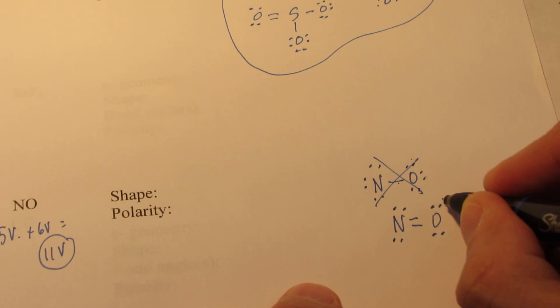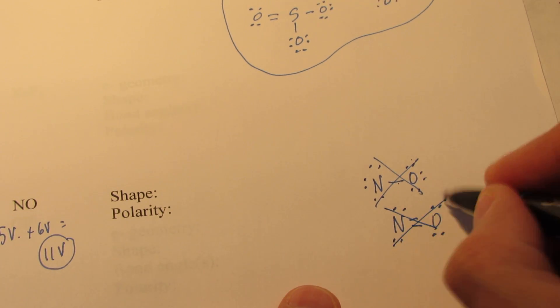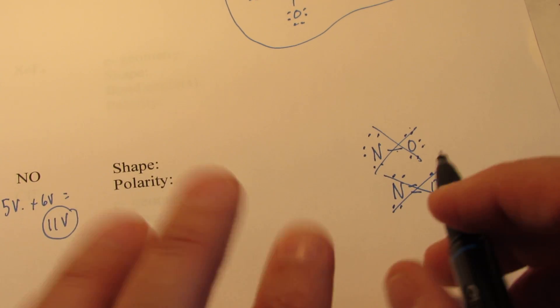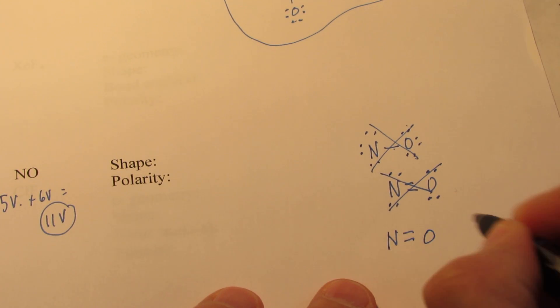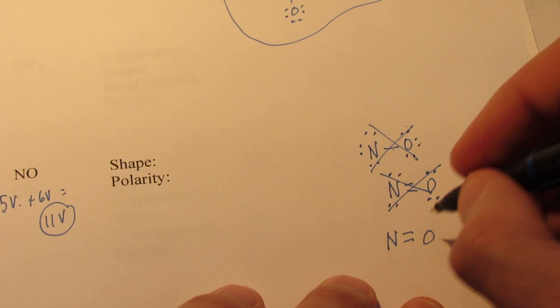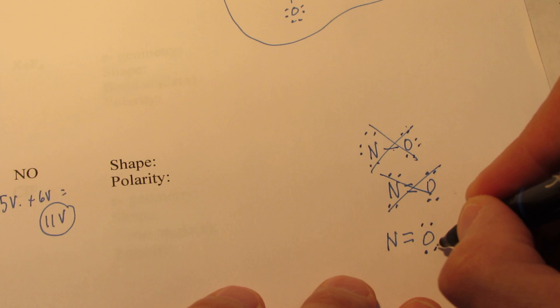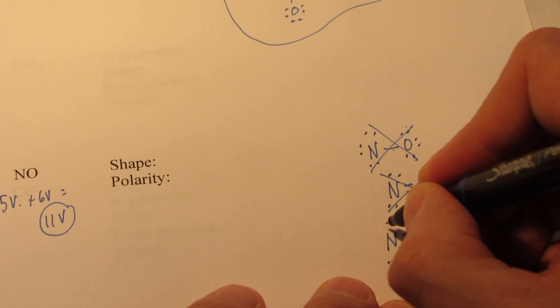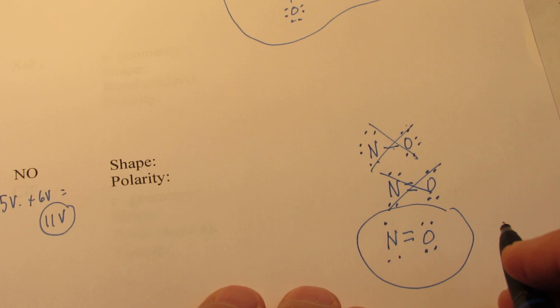So we've used 2, 4, 6, 8, 10, 12. We are allowed 11. We're almost there. So one of these two atoms has to be shorted in electron. Don't you think the most electronegative of the two atoms would get its full complement of 8? So do I. So let's give the full octet to the oxygen. And nitrogen will have an odd electron. So there's your Lewis structure for NO.